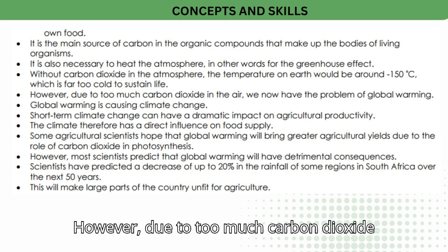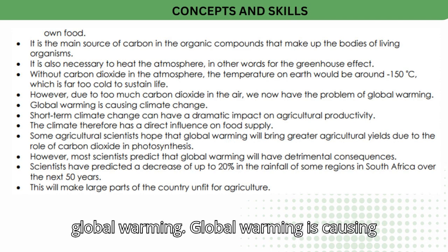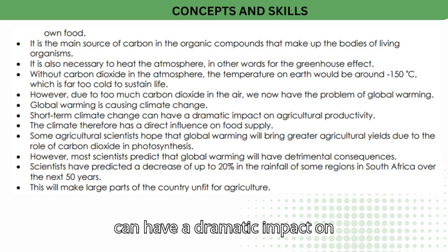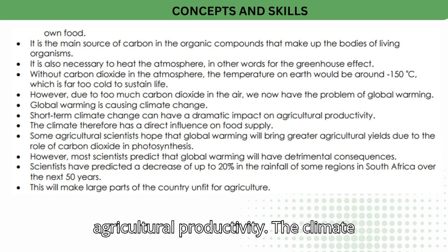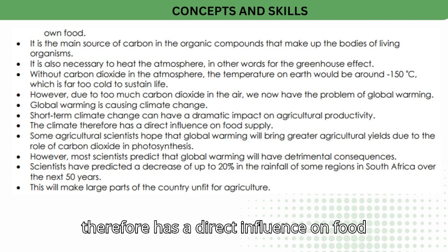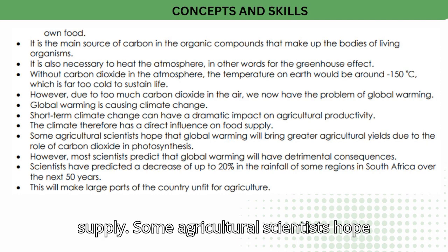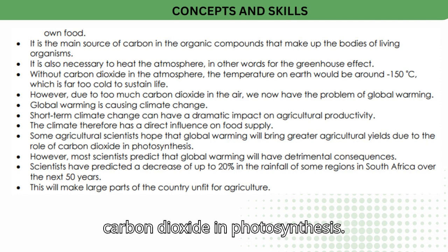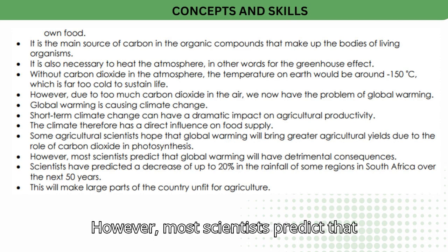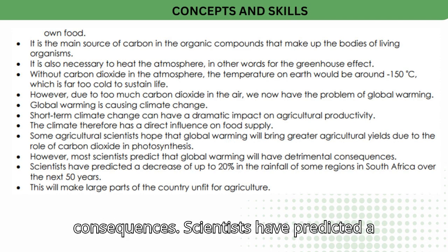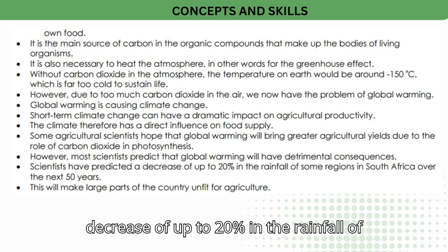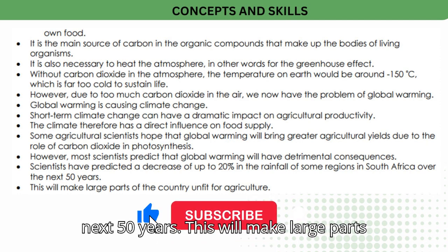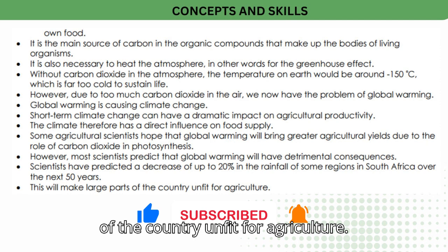However, due to too much carbon dioxide in the air, we now have the problem of global warming, which is causing climate change. Short-term climate change can have a dramatic impact on agricultural productivity, and the climate therefore has a direct influence on food supply. Some agricultural scientists hope that global warming will bring greater agricultural yields due to the role of carbon dioxide in photosynthesis, but most scientists predict that global warming will have detrimental consequences. Scientists have predicted a decrease of up to 20% in the rainfall of some regions in South Africa over the next 50 years, which will make large parts of the country unfit for agriculture.